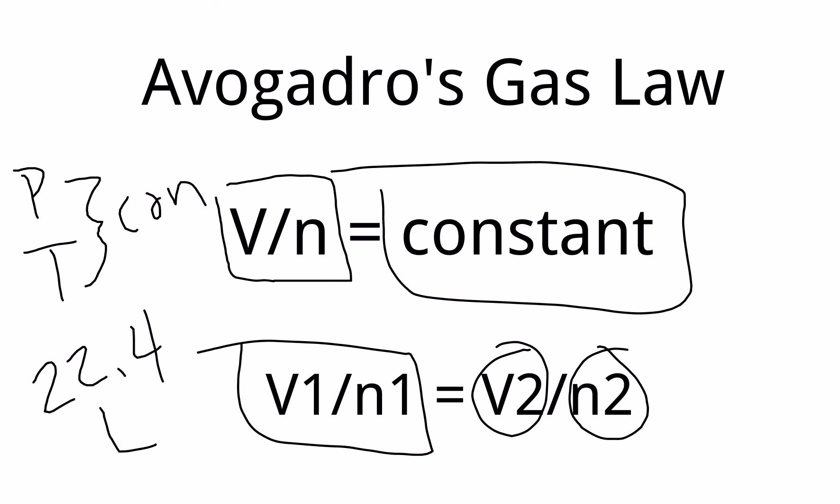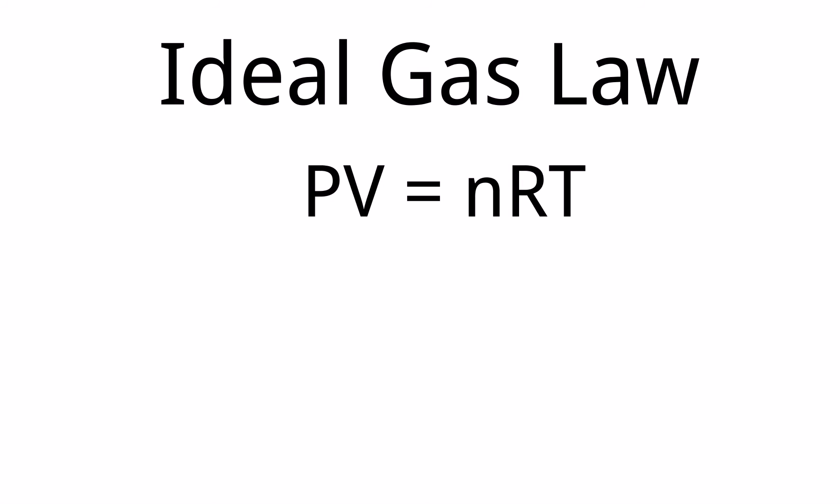So at one atmosphere, at zero degrees Celsius, or 273.15 Kelvin, one mole of gas will take up 22.4 liters. And that's going to be important, because that's going to define the constant a little later. So let's bring this together.